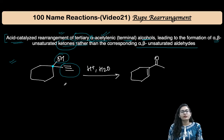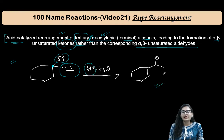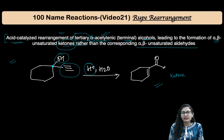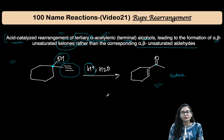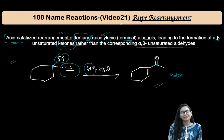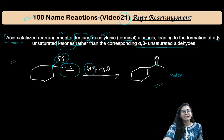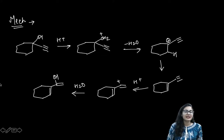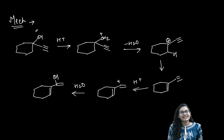In the presence of acid, the rearrangement gives you an alpha-beta unsaturated ketone — a ketone and not an aldehyde. You are not going to get the alpha-beta unsaturated aldehyde because the ketone is a more stable possibility. We will see why that is so. Before moving on to the mechanism, please share the videos if you find the content useful — we have a target of 100 name reactions.